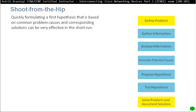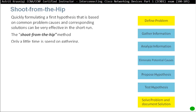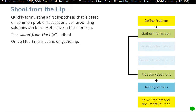Hunters who shoot from the hip — quickly formulating a first hypothesis based on common problem causes and corresponding solutions — can be very effective in the short run. If you've seen a similar problem before and know how to fix it, the shoot-from-the-hip method works: only a little time is spent gathering information, and right away you propose and test the hypothesis to solve the problem.